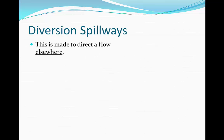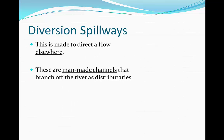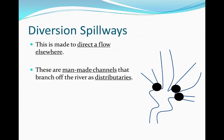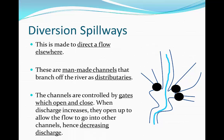Diversion spillways are made to direct the flow elsewhere. These are man-made channels that branch off as distributaries from the river. Originally the river flows forwards, and the man-made channels — indicated by the black spots — are controlled by gates which open and close. When discharge increases, the gates open and allow the flow to go elsewhere, increasing the discharge flowing through that channel. Now because the water flows through two different channels, the discharge in the original channel decreases.